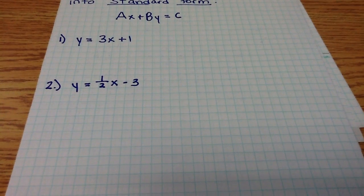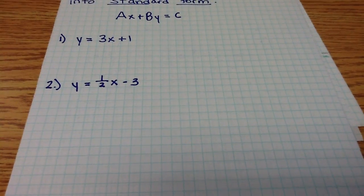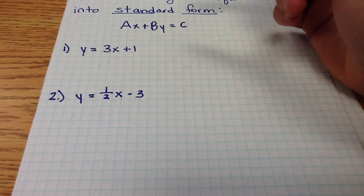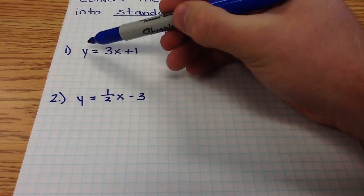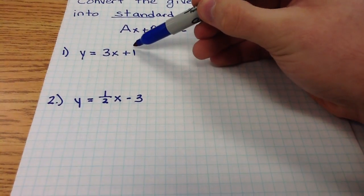When we look at number one, y equals 3x plus 1, we remember that A will always be the coefficient of x, B will always be the coefficient of y, and C will always be that constant term on the end.